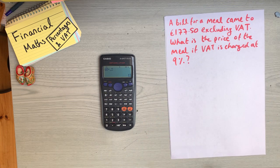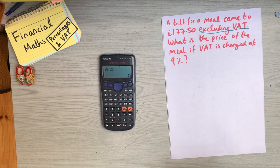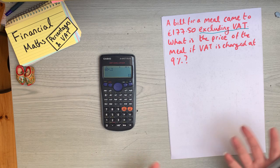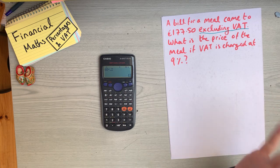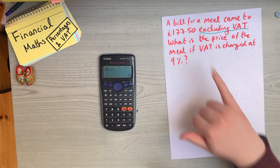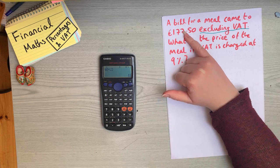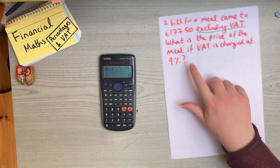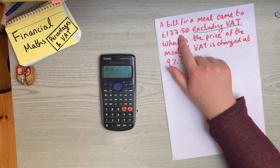So let's have an example of a question to do with VAT. A bill for a meal came to €177.50, excluding VAT. What is the price of the meal if VAT is charged at 9%? VAT stands for value-added tax — it's the tax that the government applies to most goods and services. You normally see it at the bottom of your receipts. This €177.50 is the cost without VAT, so the customer has to pay the VAT on top of that. We need to find what 9% of this is and then add it on.